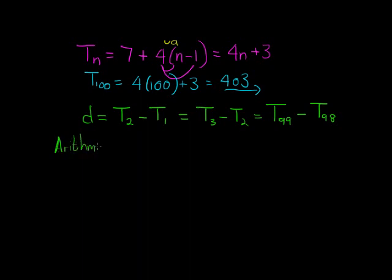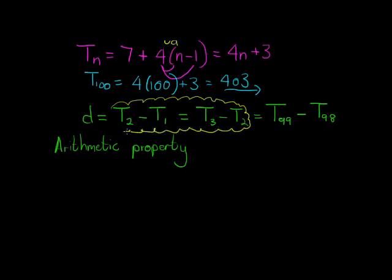Now this gives me also the arithmetic property. This is the arithmetic property: term 2 minus term 1 is equal to term 3 minus term 2. Why do I call that the arithmetic property? Well, it's an equation. And you'll see that this equation is quite useful if they only give me a certain number of terms and not a lot of information regarding that.